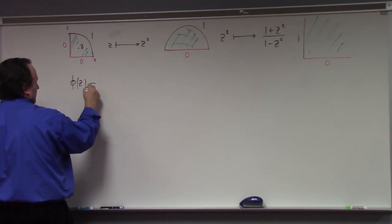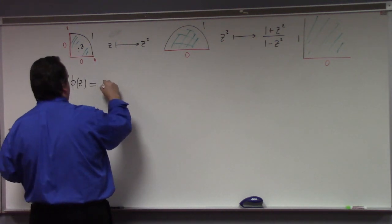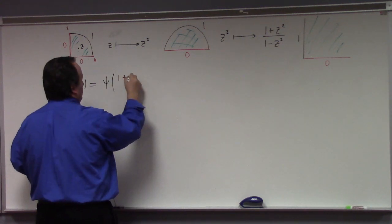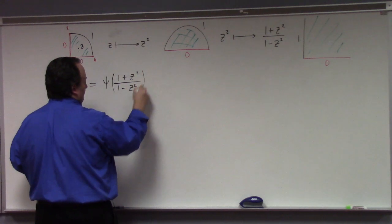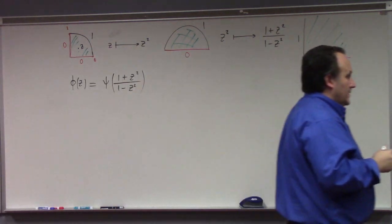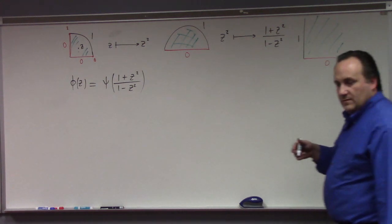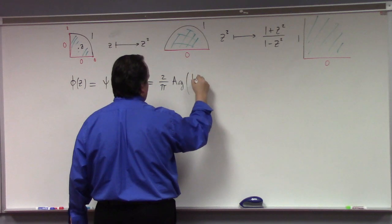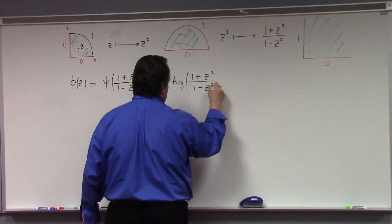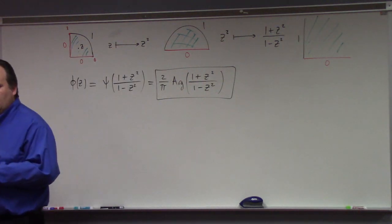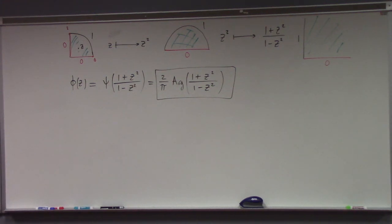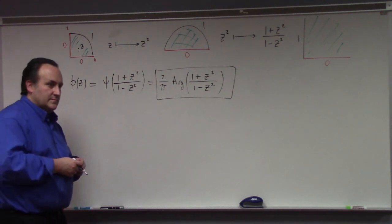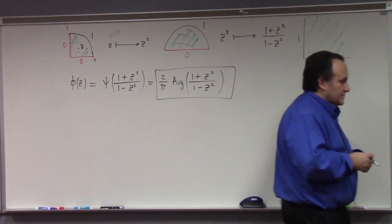Phi of z is equal to psi of, in this case, one plus z squared over one minus z squared. But it's two over pi argument, right? That is a solution to Laplace's equation on the quarter disk. Now, this is an example of conformal mapping where we have not used just the Mobius transformation, right? Squaring is not a Mobius transformation.